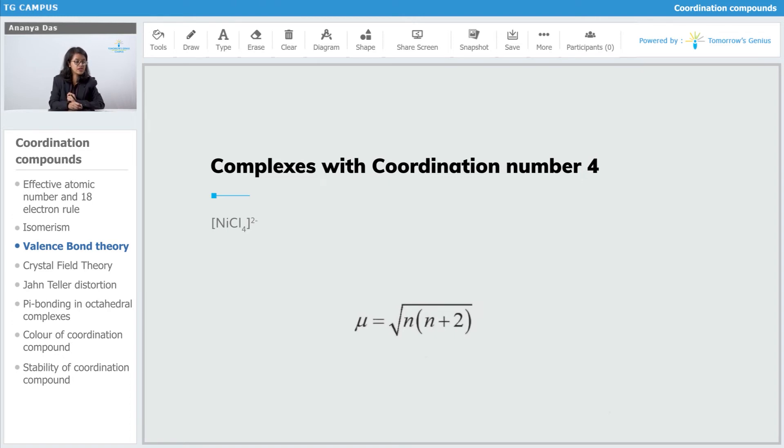NiCl4 2 negative. This was a tetrahedral complex. In this case, nickel was 3d8. NiCl4 2 negative.